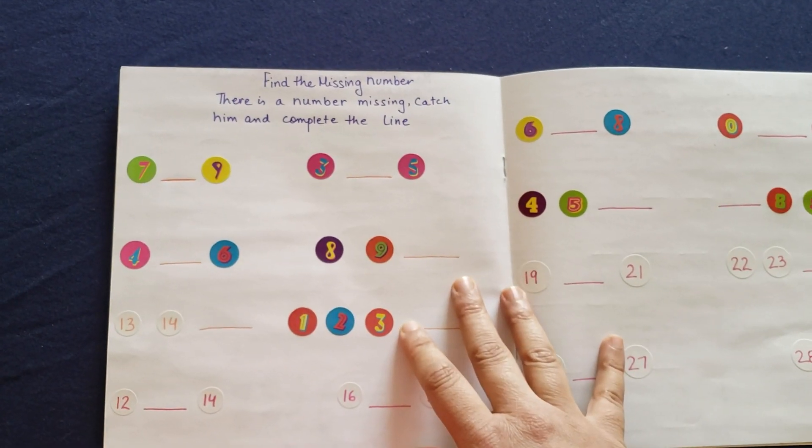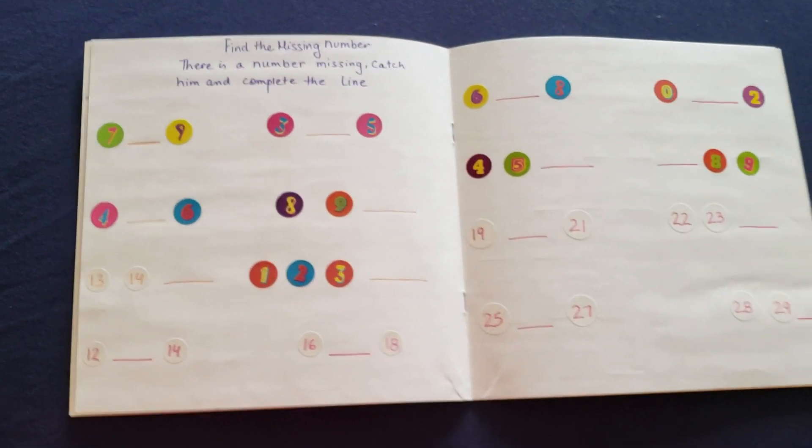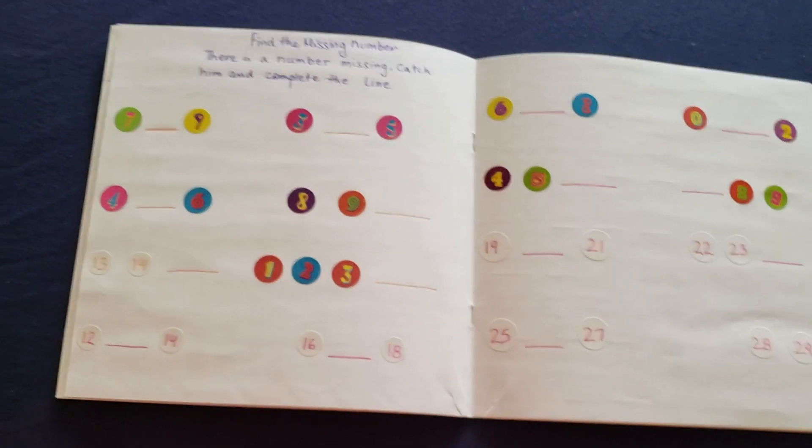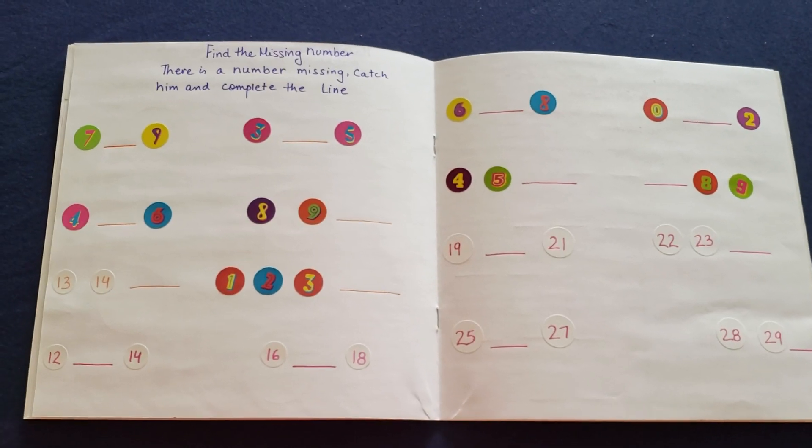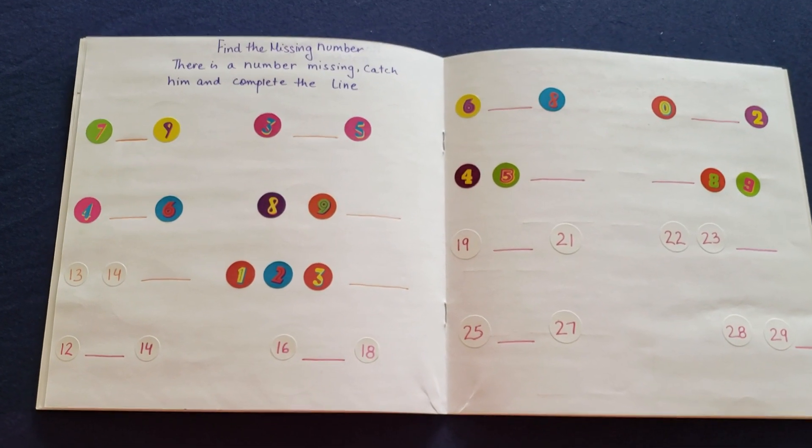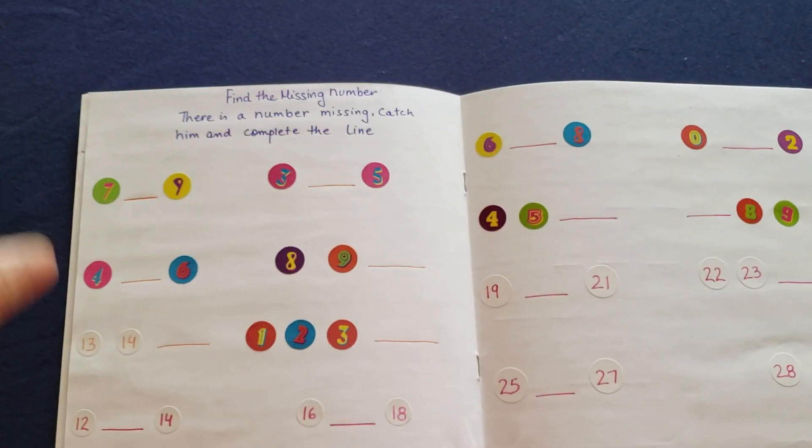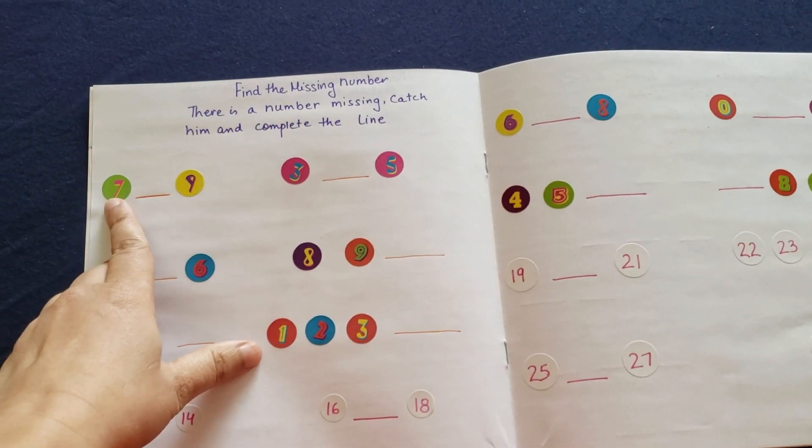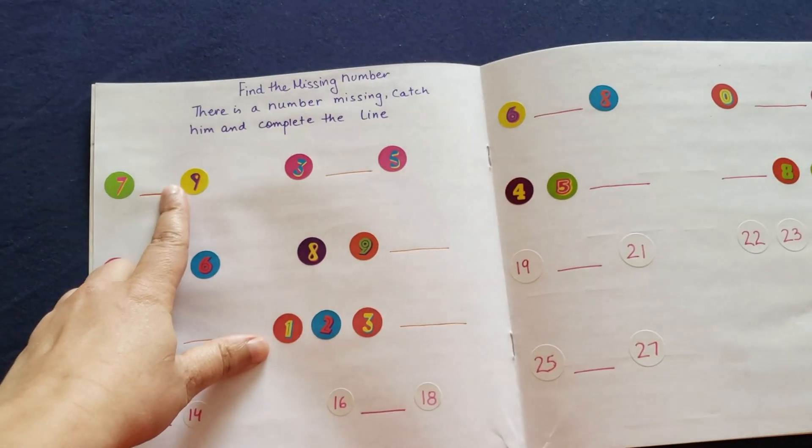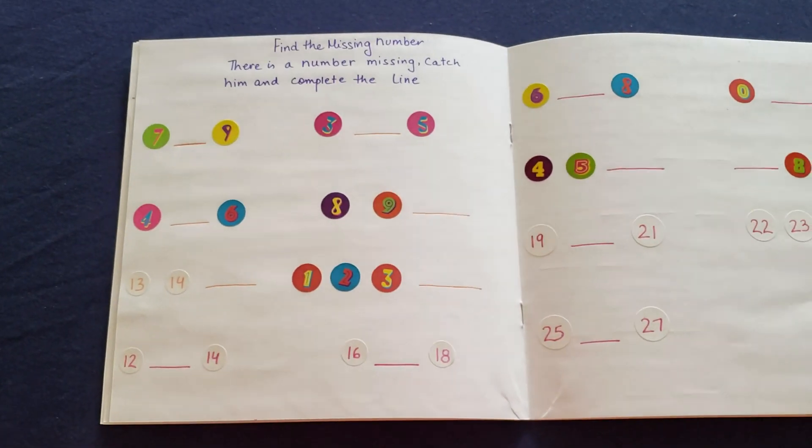Okay, find the missing number. There's a number missing. Catch him and complete the line. So there is in between, after, not something to categorize that we are doing in between or after or before, but just to reinforce the numbers the way we do. So she might be counting one, two, three, four, five, six, seven and then writing eight. That's a perfect way because I'm not teaching her to do in between right now. I am just reinforcing the counting or the numbers so that it comes very naturally to her.